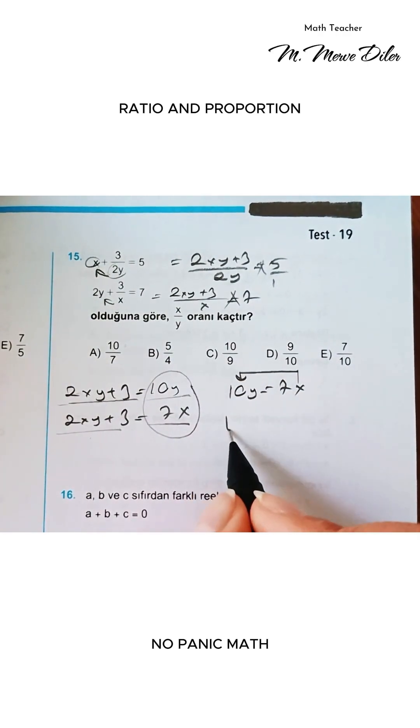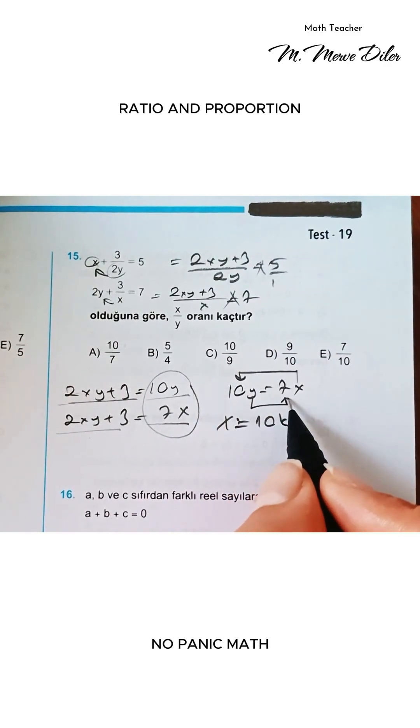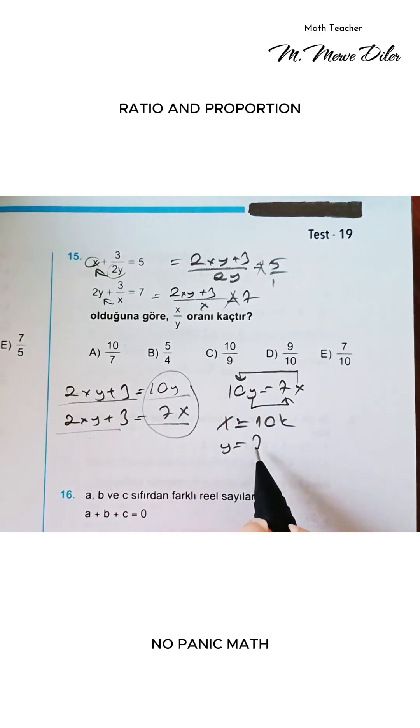Look, what will x be? Guys, x is 1 of 10 or a multiple of 10, and y means it will be 1 of 7 or a multiple of 7.